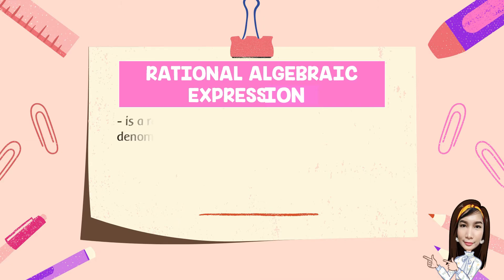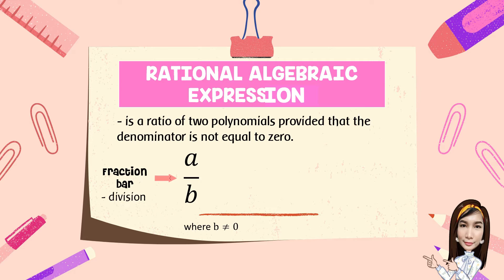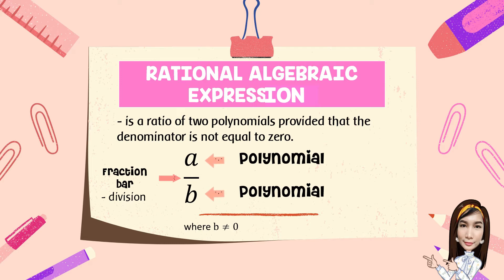A rational algebraic expression is a ratio of two polynomials, provided that the denominator is not equal to 0. It is written in the form a over b, where b is not equal to 0. The fraction bar denotes division. Both a and b are polynomials, giving us the ratio of two polynomials. When b is equal to 0, the expression is considered undefined.